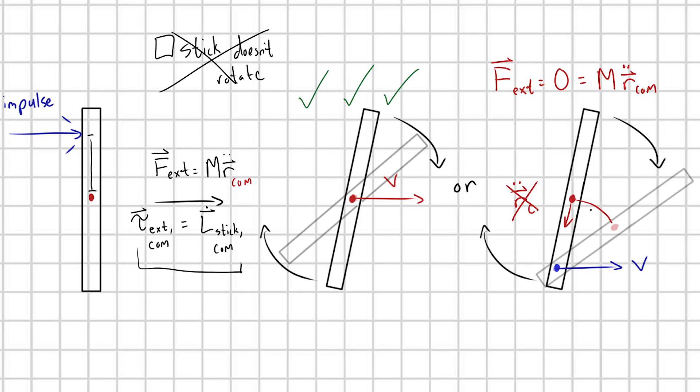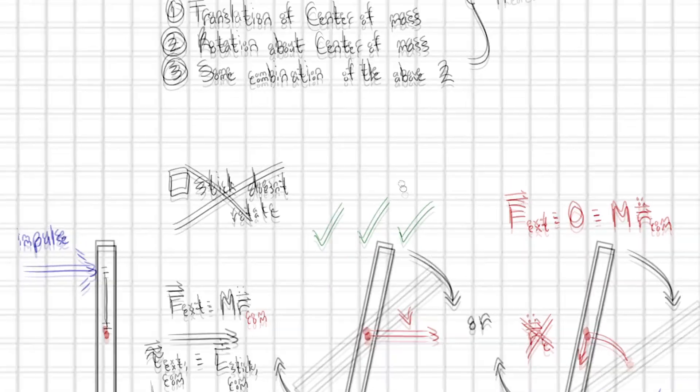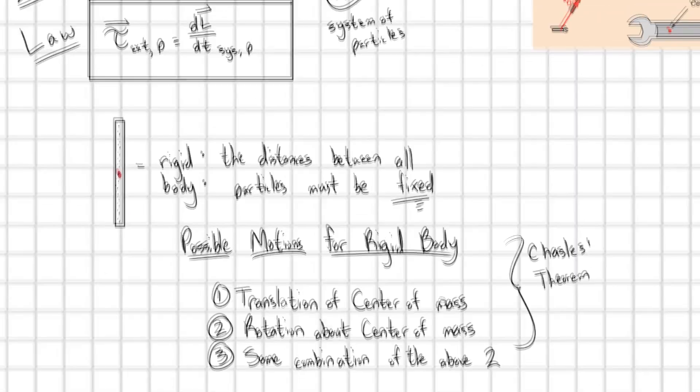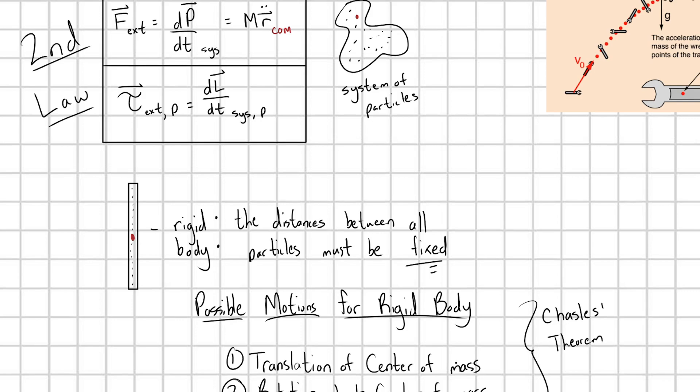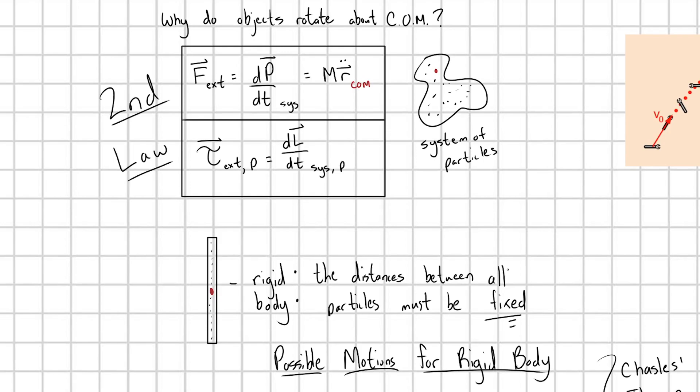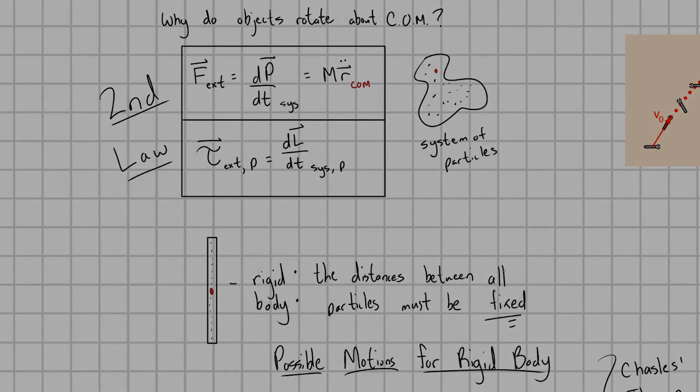Hopefully this video made it clear why the center of mass is this natural rotation point for objects. It's because you don't require any centripetal acceleration pulling the center of mass, which you would require for rotation about any other point. I tried to cover quite a bit of content and thoroughly explore rigid bodies and remind us about our second law dynamics. Thank you so much for watching.